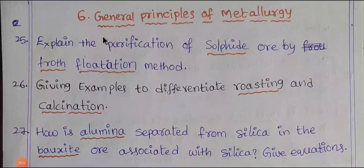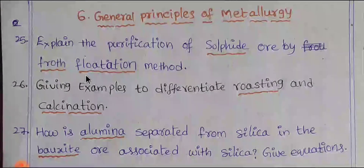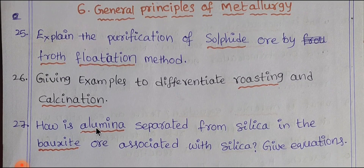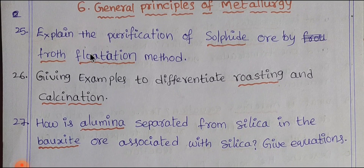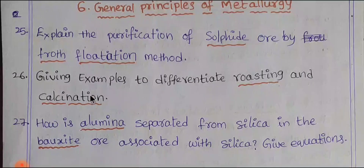Students, we have General Principles of Metallurgy. We have 6 marks — so there are 4 marks and 1 to 2 marks. First, there is the froth flotation process. We have a separate process. Roasting and calcination are very important topics here.